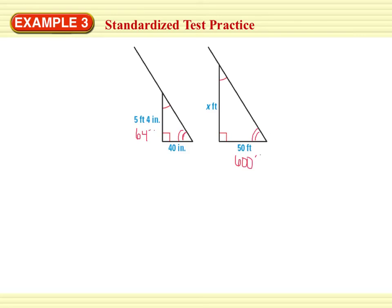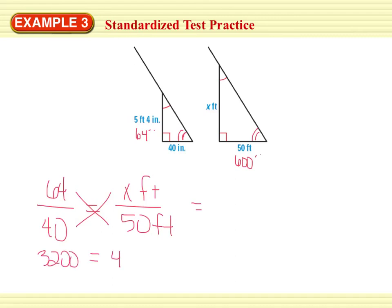So you can use the proportion to find the height x. We wrote 5 feet 4 inches to 64 inches, so you can form two ratios of feet to inches. We can say 64 inches, which is the height of the person, the proportion to 40 inches, which is the shadow, is equal to, we can actually keep this in feet, x feet over 50 feet. Cross product. 64 times 50 is 3200 equals 40x. Divide both sides by 40. x equals 80 feet.